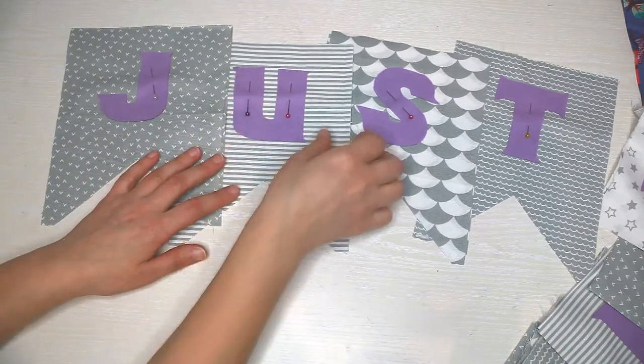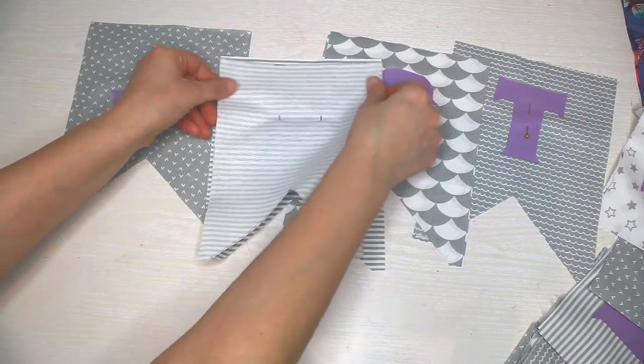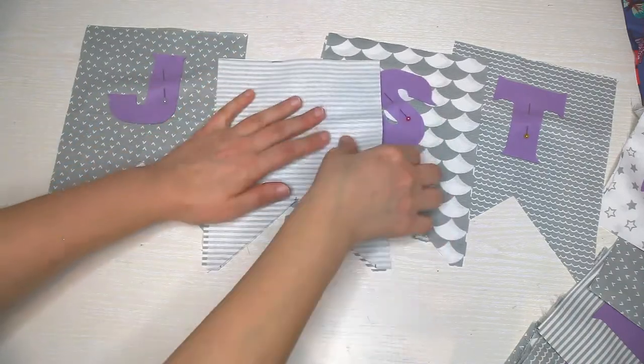Next you will sew the letters. Then place the sides of the flags right sides together and sew them, leaving the top open.